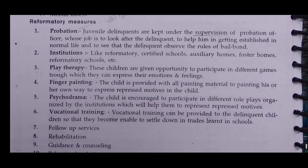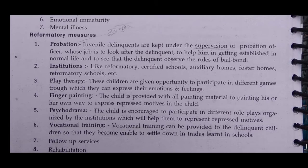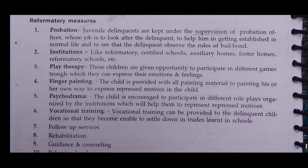Next we will talk about reformatory measures, also called management. The first is probation. Probation means children are kept under the supervision of probation officers, whose job is to look after the delinquent, help them get established in normal life, and ensure that the delinquent observes the rules of the bail bond. Probation is essentially a supervised setting where children can modify their bad behavior.